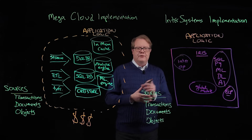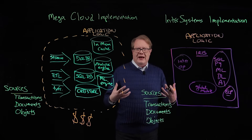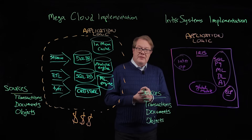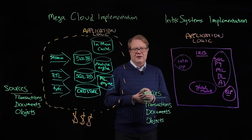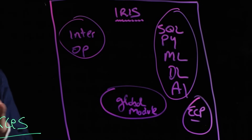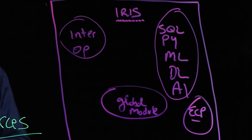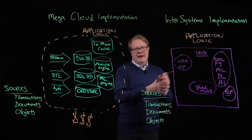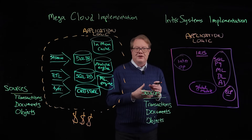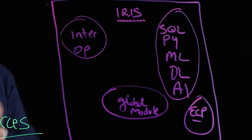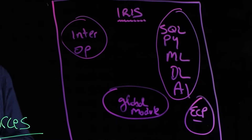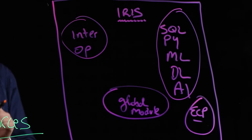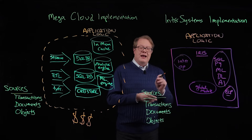Once data gets into IRIS, we use the global module, which is what allows us to be multi-model — meaning we can handle transactions, documents, objects, key-value pairs; it doesn't matter. We store the data exactly as we've got it and then cast it for the application the way the application needs to see it — maybe as a set of tables through SQL, maybe as data objects for a Python algorithm, and anywhere in between — all off a single individual copy of the data.